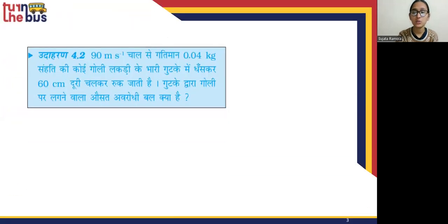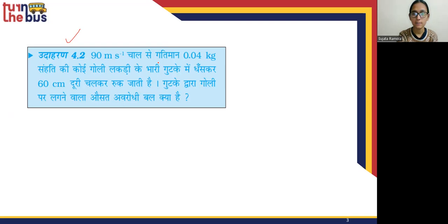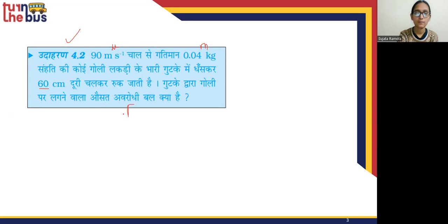Let's see what we covered in 4.2. The examples we are going to see involve momentum. Newton's second law of motion is what we are going to see. In 4.2, the charge is 90 meters per second, which is the momentum. The mass times velocity (Vm) gives us the momentum.